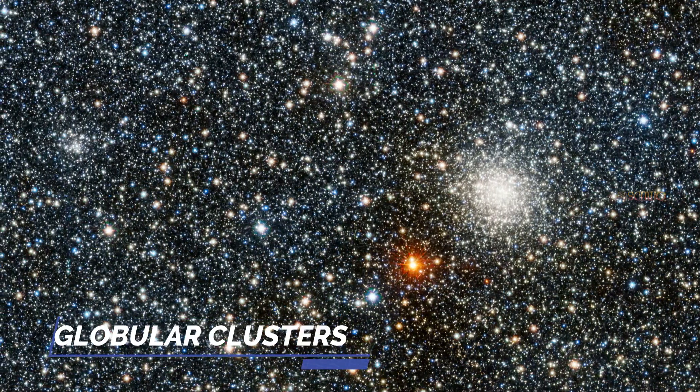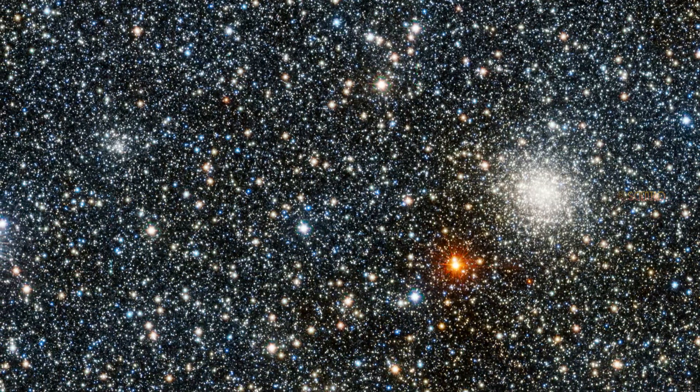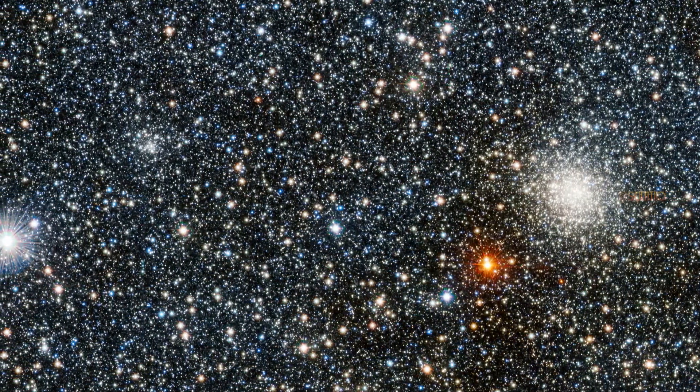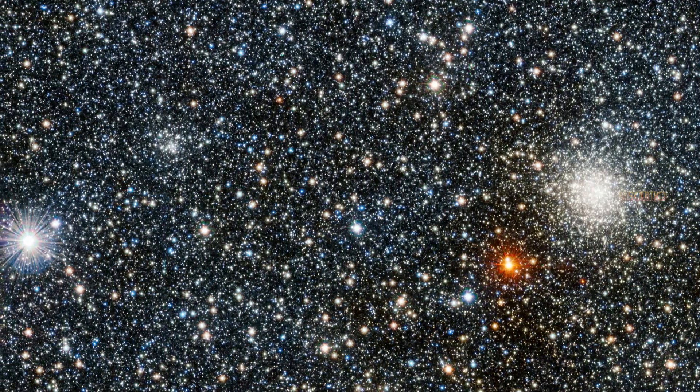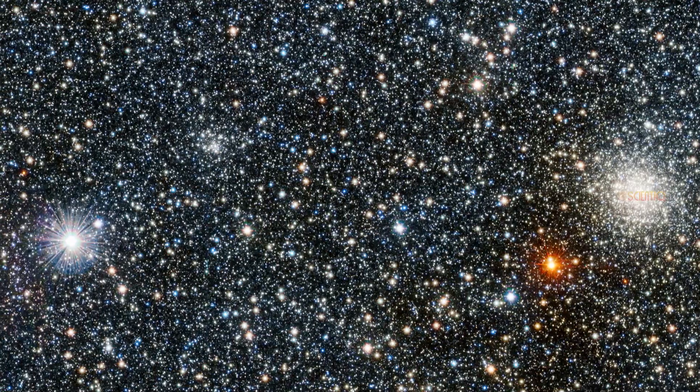Globular Clusters. These are dense clusters of stars that are found in the halos of galaxies. They contain hundreds of thousands of stars, all gravitationally bound together, and are thought to be some of the oldest structures in the universe.